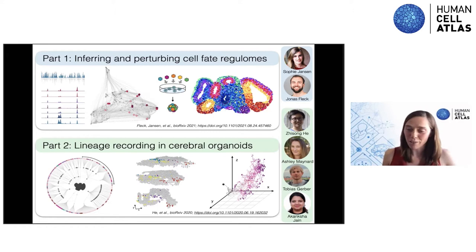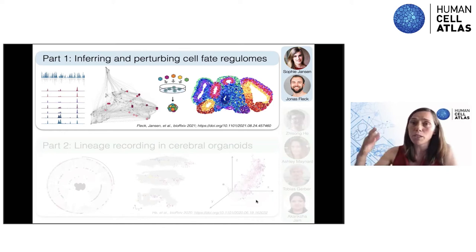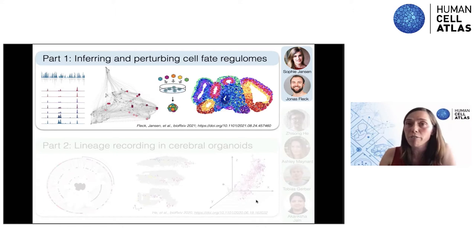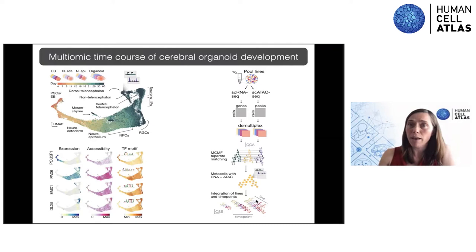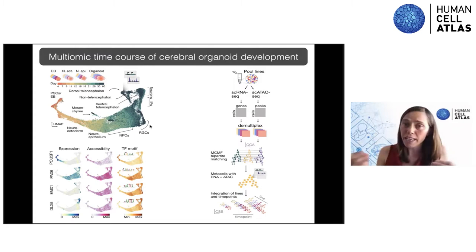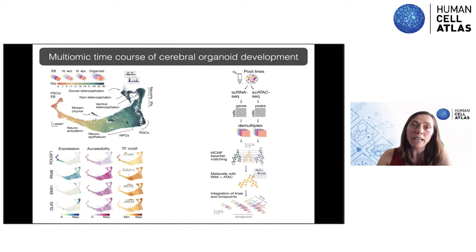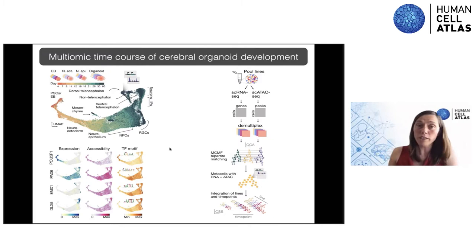We wanted to go beyond simple transcriptomic profiling and also measure chromatin accessibility over human brain organoid development in order to get at gene regulatory networks. We generated a new dataset with paired single-cell RNA-seq and single-cell ATAC-seq measurements for organoids from four different lines over a dense time course of early brain organoid development. We find the matching of RNA and ATAC, create meta-cells containing both modalities, integrate lines and time points, and quantify transcription factor binding motif abundances.